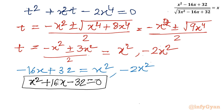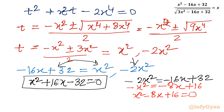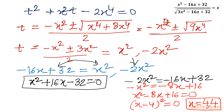From the second case, -2x² = -16x + 32. Dividing by 2 gives -x² = -8x + 16, or x² - 8x + 16 = 0. This is a perfect square — it factors as (x - 4)² = 0, giving x = 4 with multiplicity 2. So x = 4 is our solution from the second quadratic equation.